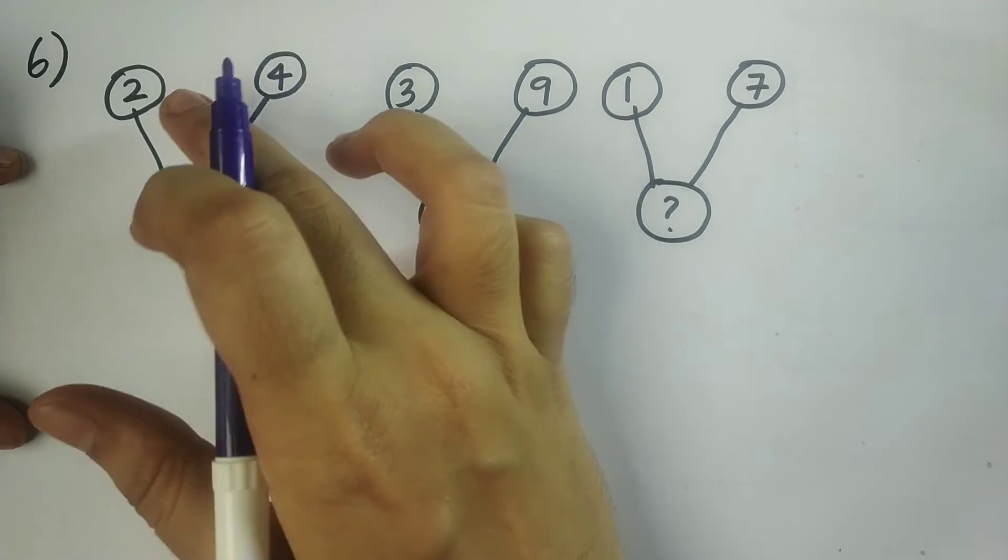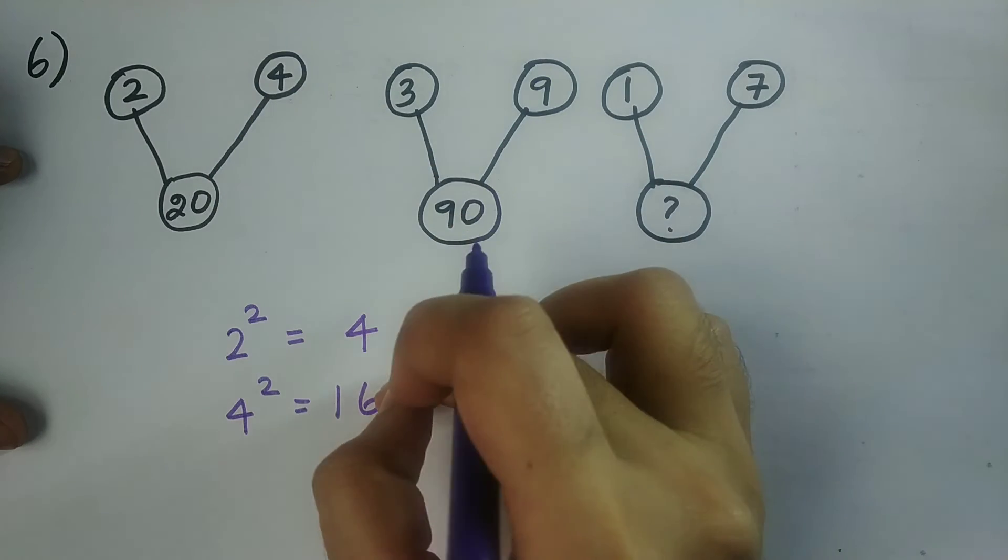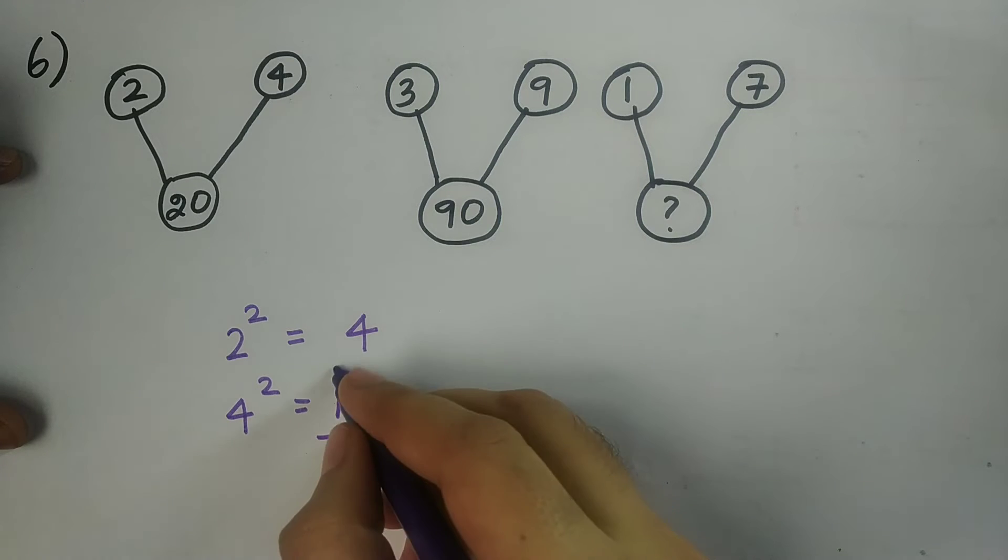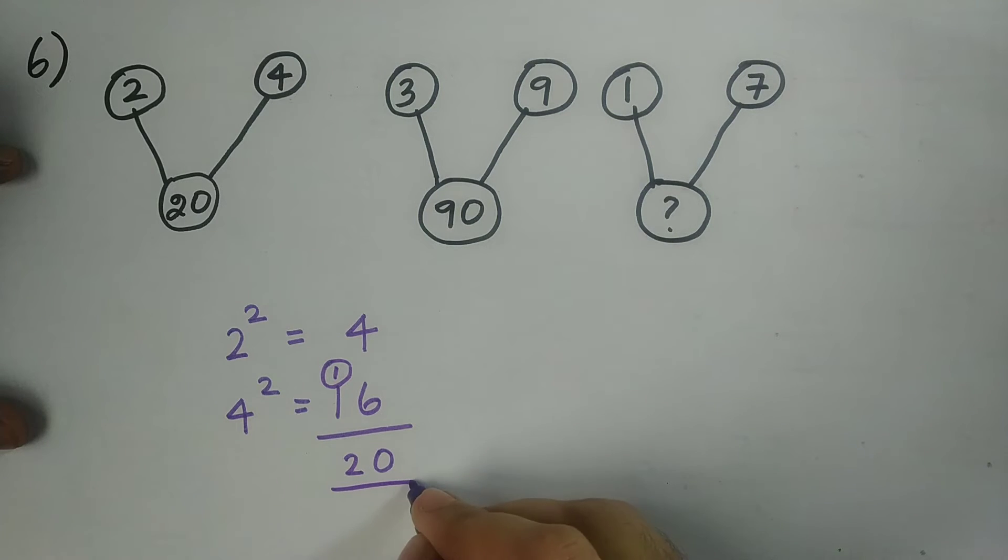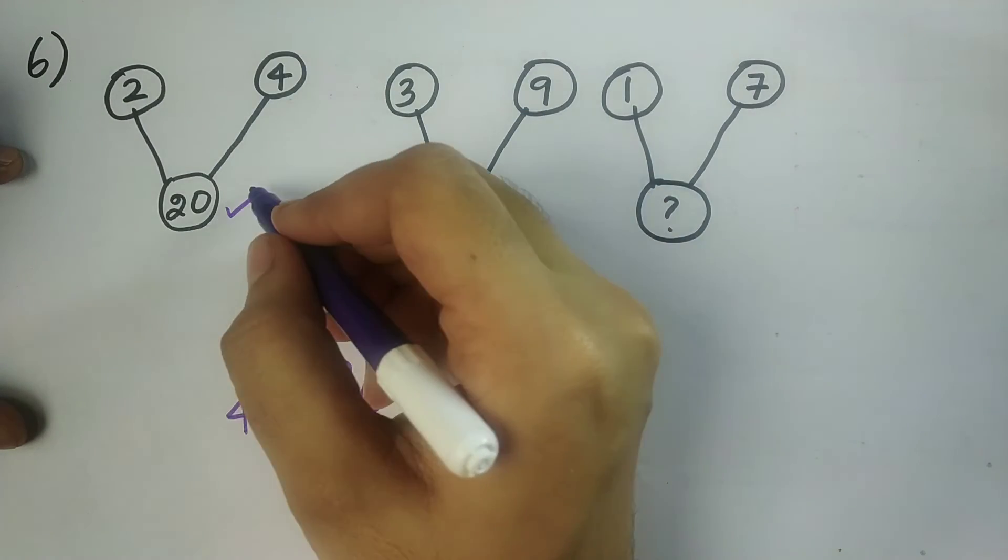After squaring the two numbers on top, I should add those values. So 4 plus 16. I will get the answer as 20. So this value is matching with this.